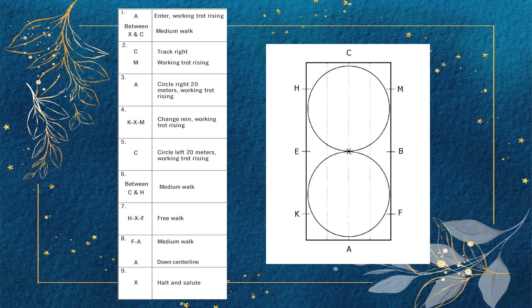M: Working trot rising. A: Circle right 20 meters working trot rising.